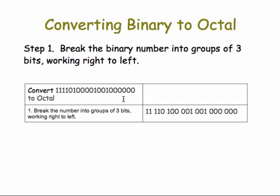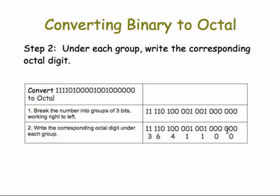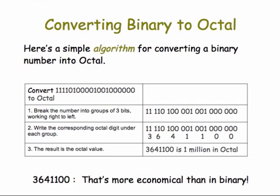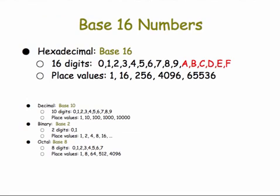Here's a simple algorithm. Step 1: break the binary number into groups of 3 bits, working right to left. I've taken 1 million here and broken it into groups of 3 bits working right to left — the last group on the left has only 2 bits. Step 2: write the octal digit for each 3-bit quantity. So this is a 1, 1, 4, 6, 3. Step 3: just read off that number — 3641100 — which is a much more economical representation than binary.